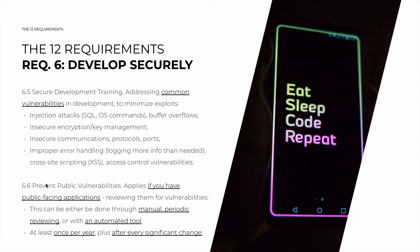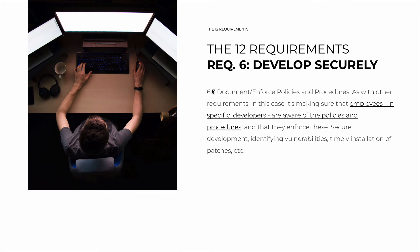6.6 is only applicable if you have public-facing applications, and it's about preventing public vulnerabilities. Because your apps face the public, they are a lot more exposed to attack, so they must be reviewed especially frequently. Reviews can either be done through manual periodic reviewing by specialists or with an automated tool. The periods imposed by PCI DSS are at least once per year, but also on every significant change. If you have a banking application facing the public and you develop a significant set of new features, you have to test for public vulnerabilities again. The logic is that new vulnerabilities are going to show up at least once a year, and definitely if you roll out new features.